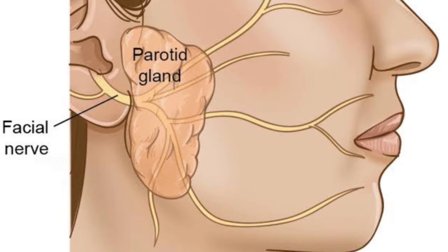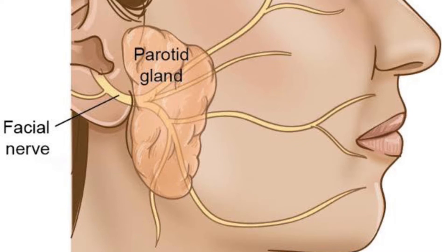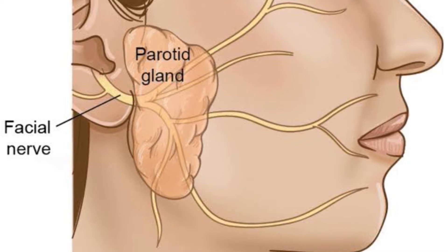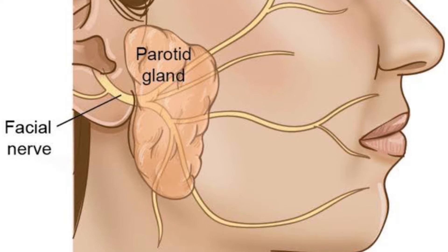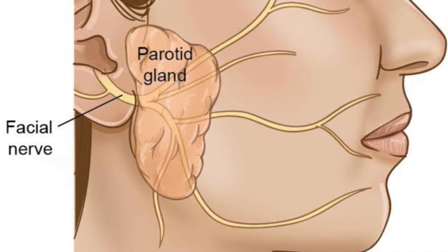The parotid gland is composed primarily of serous cells. The parotid gland, the largest of the salivary glands, is positioned on the lateral aspect of the face overlying the posterior surface of the mandible, anterior and inferiorly to the auricle. It has a superficial and deep lobe based on the course of the facial nerve as it traverses the gland. Most benign tumours are located within the superficial lobe of the parotid gland, so the management is usually a superficial parotidectomy.